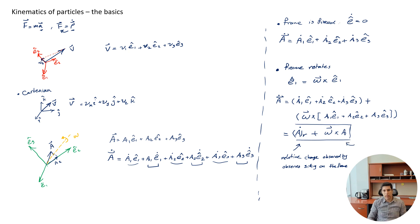And this term considers the effect of rotation of the frame. And this one is the actual or total change of vector A.